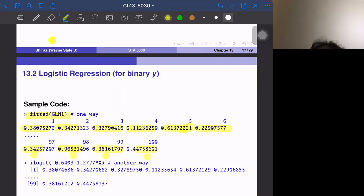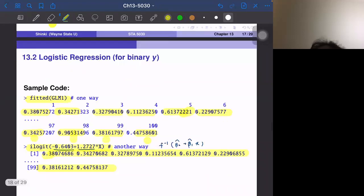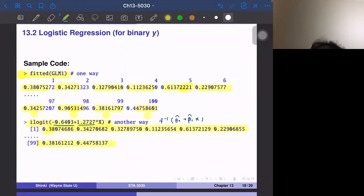These probabilities can be calculated by the ilogit function. Ilogit is F inverse. This is beta naught and beta one hat. If we plug in all 100 X values, we can exactly get the same numbers. We have two different ways to get fitted values: one automatic way and the other from scratch.